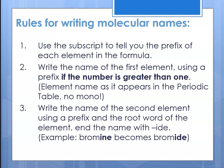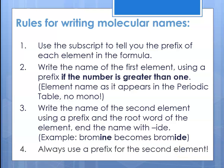We have to change the element's name to give it the 'ide' ending. In chemistry, that 'ide' ending tells us it's a binary compound. For example, if the second element was bromine, we would change that name to 'bromide.' The root there is 'brom,' so it goes from bromine as it appears in the periodic table to bromide to indicate it's a binary compound. Always use a prefix for the second element.